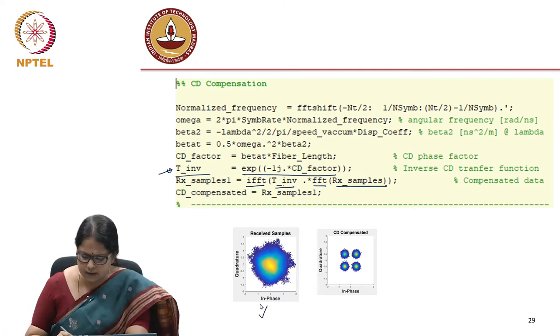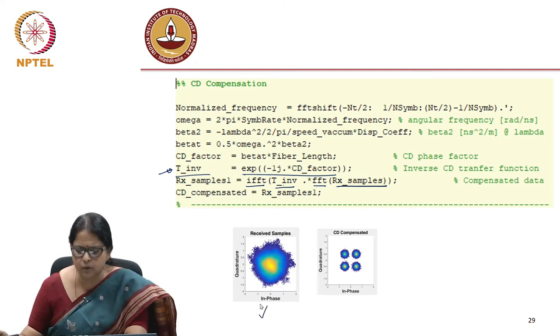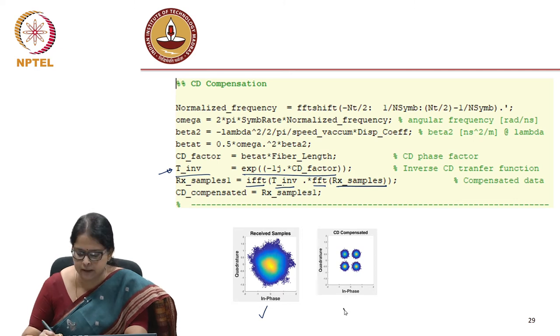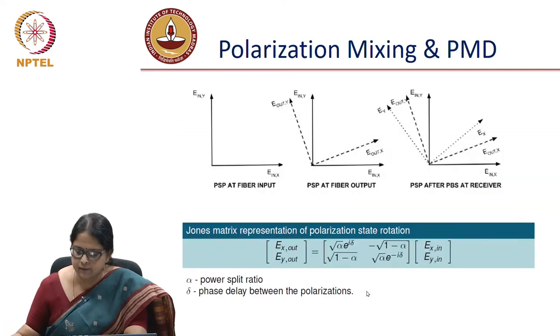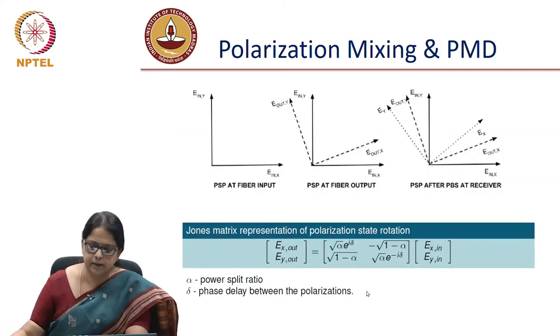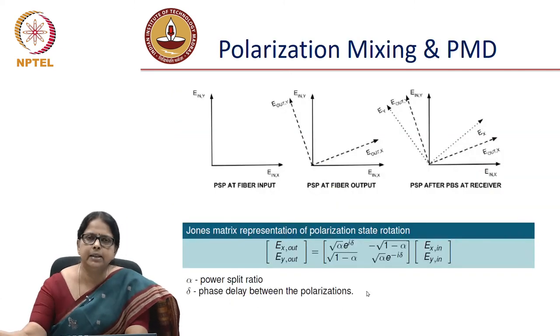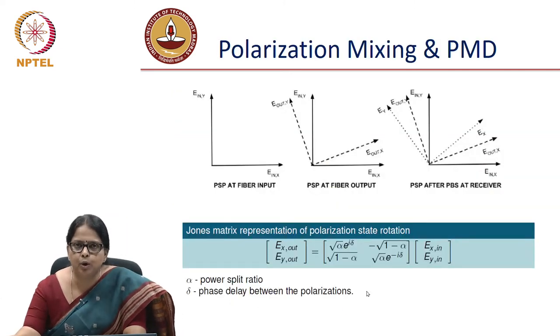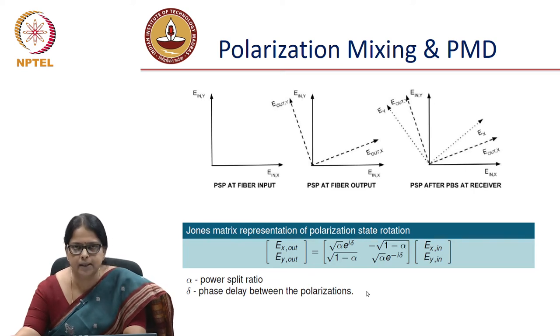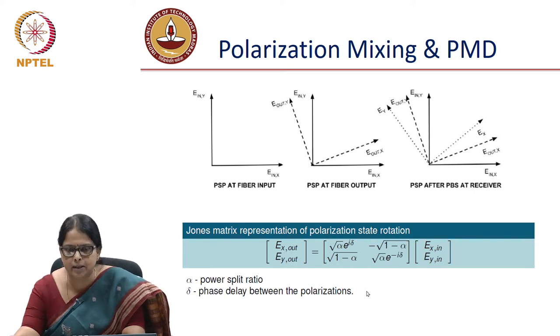Any amount of CD can be compensated with this approach, and it is also independent of modulation formats. This is how the symbol looks before CD compensation and after CD compensation. The next impairment is polarization mixing and polarization mode dispersion. Let us see what polarization mixing is — we have already seen this.